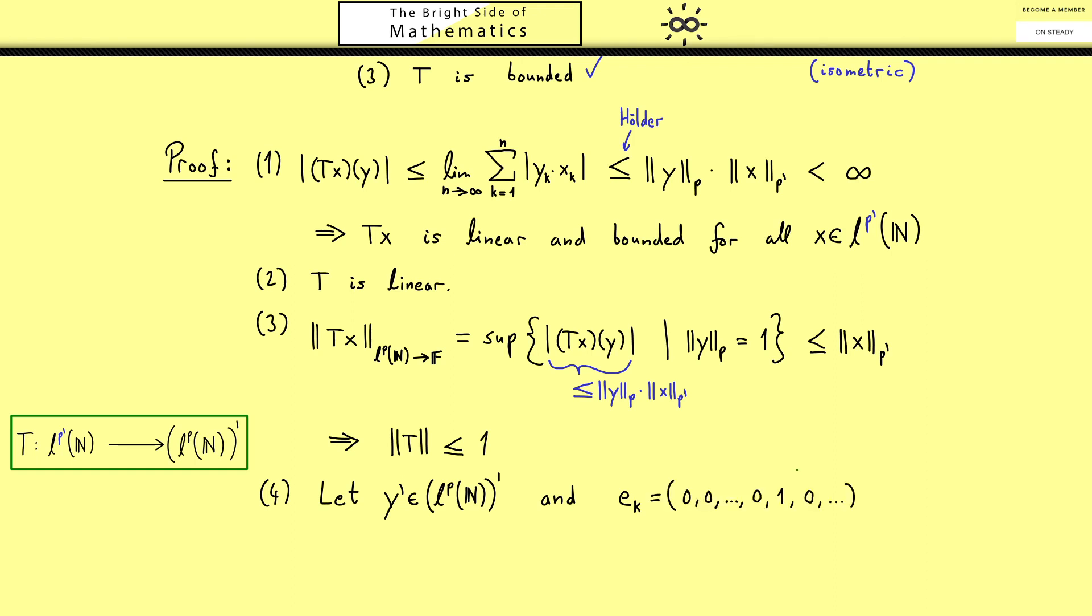Now the vector ek is given by the sequence that only has zeros everywhere with the exception at the k-th position there is a 1. Now by applying y prime to all the ek's we get a whole sequence of outcomes. And let's call the members just xk. Hence we get a whole sequence which we call x.